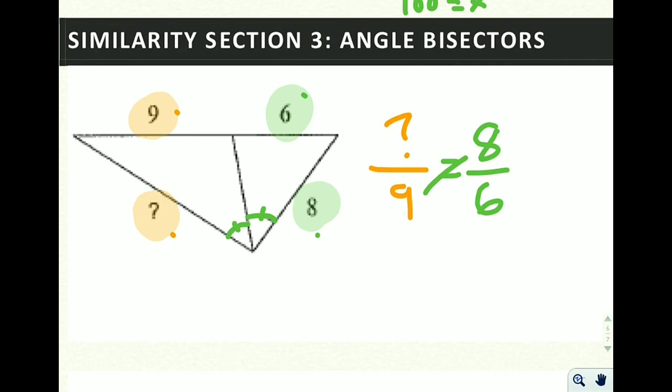To solve it, we always cross multiply and divide, so 9 times 8 is equal to 6 times, let's call that x, 6 times x.